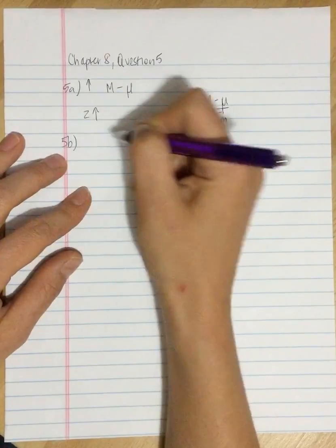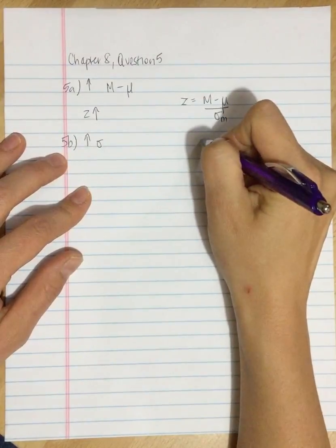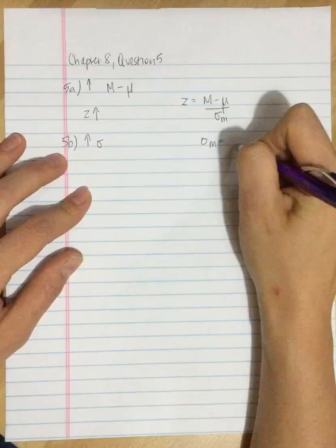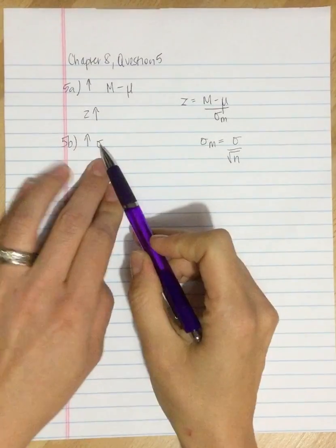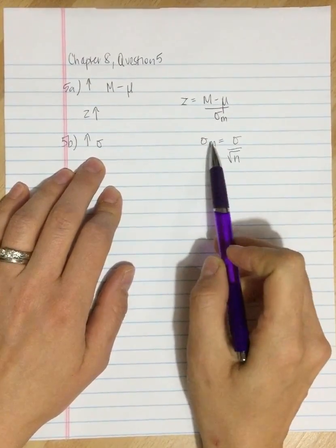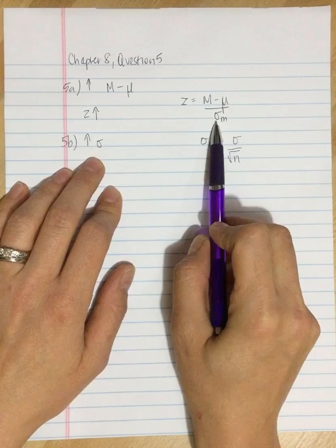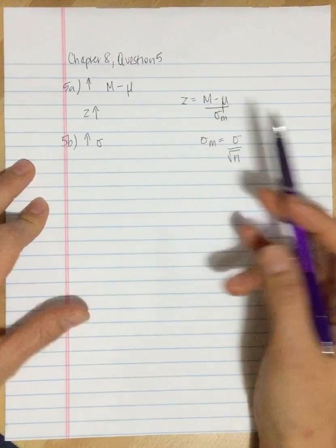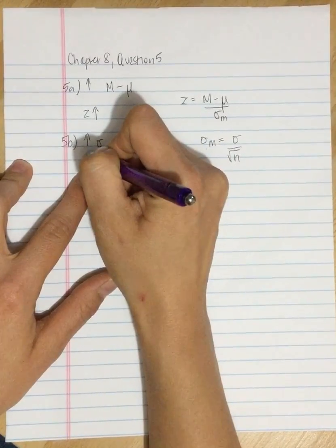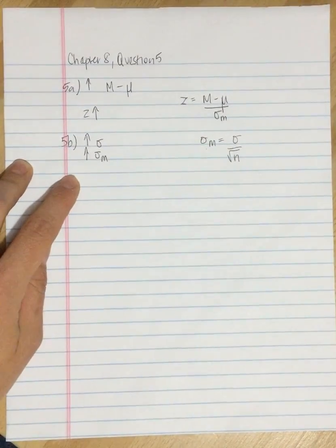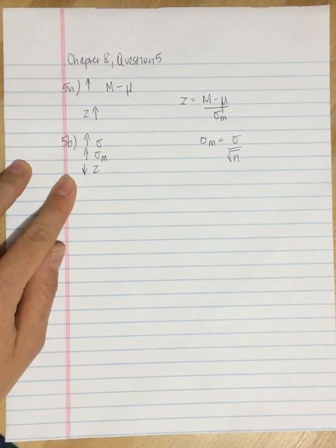5b: increasing the population standard deviation. The standard error is the standard deviation of the population divided by the square root of n. So if we increase the standard deviation, we're going to increase the standard error. If we increase the standard error, we're increasing the denominator of the Z-score, and that Z-score is going to decrease. So as the standard deviation increases, your standard error increases, and your Z-score decreases.